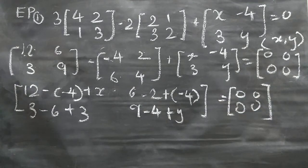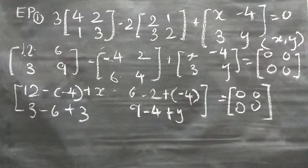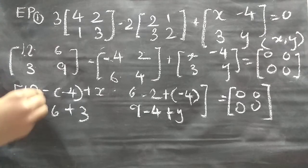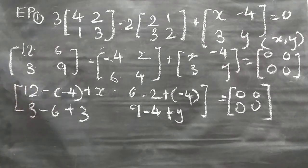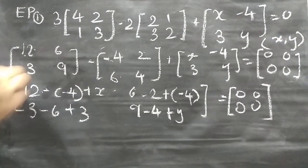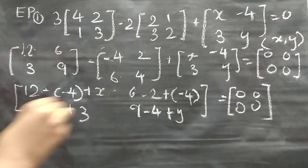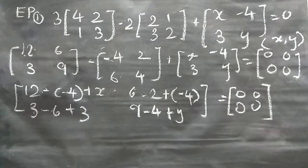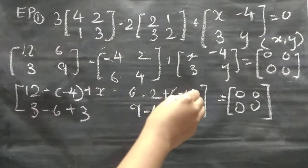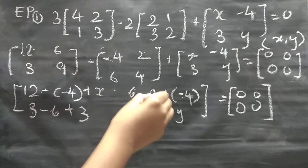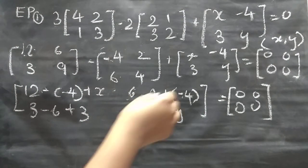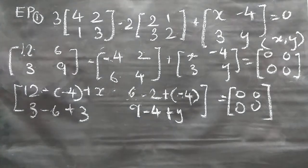Now let's simplify. Minus of minus 4 becomes plus, so 12 plus 4 is 16. 16 plus x. Below: 3 plus 3 is 6, and 6 minus 6 is 0. On the right side: 6 minus 2 is 4, and 4 minus 4 is 0.